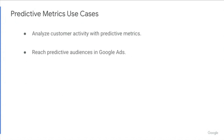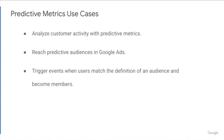Predictive audiences automatically determine which customer actions on your app or site might lead to a purchase, helping you find more people who are likely to convert at scale. Or let's say you're an online publisher and you want to maintain your average number of daily users. You can build an audience of users who are likely to not visit your app or site in the next seven days and then create a Google Ads campaign to encourage them to read one of your popular articles. You can also use a feature called audience triggers to trigger events when users match the definition of an audience and become members.